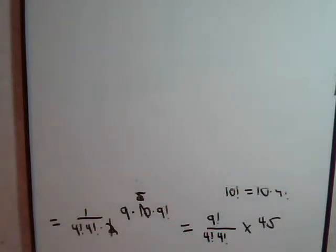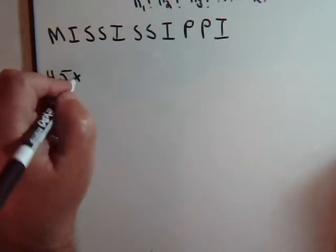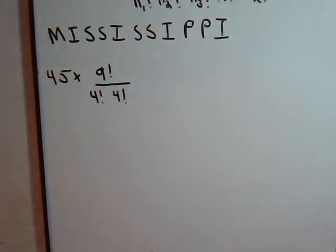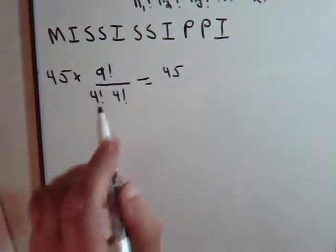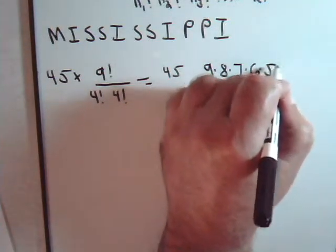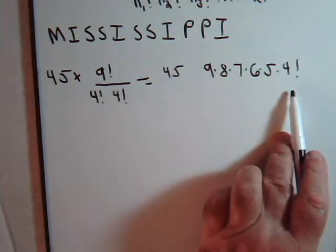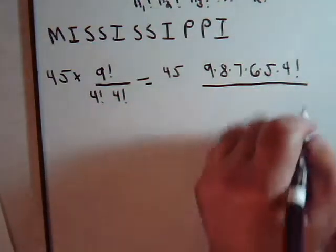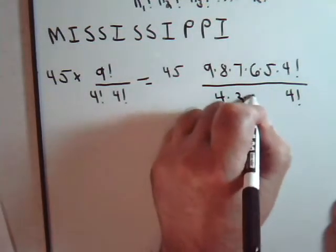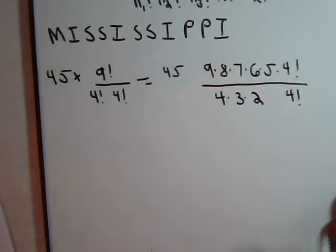We have 9 factorial, we have 45, times 9 factorial, divided by 4 factorial, times 4 factorial. So here then, we have 45 factorial, that's 9 times 8, times 7, times 6, times 5, times 4 factorial, divided by 4 factorial, times 4 factorial, which is 4 times 3 times 2, like this. So these cancel.